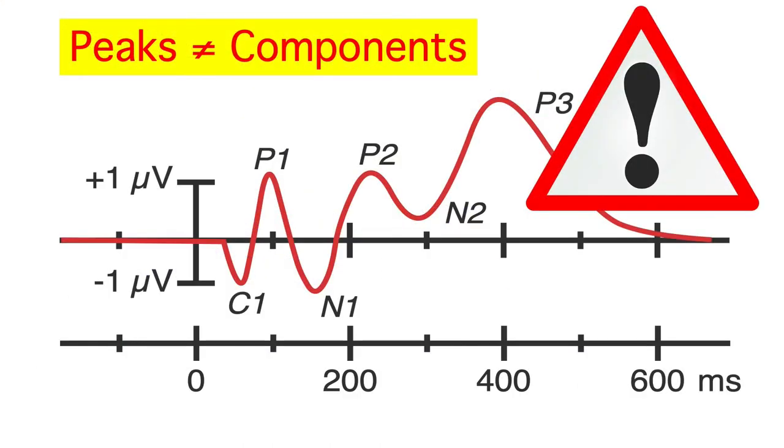The terms peak and component are sometimes used synonymously, but they really refer to different things. Peaks are things that we can observe in our scalp recordings, whereas components occur in the brain and can't be directly observed from scalp electrodes. The observed peaks are the result of the underlying brain components, but the relationship can be complex. So be careful - peaks and components are not the same thing. And one of the most challenging things about ERP research is to go beyond the observed peaks and understand what's happening with the underlying components.